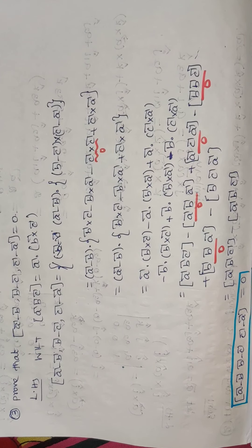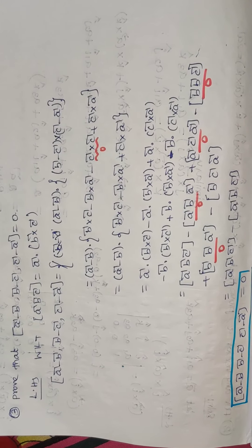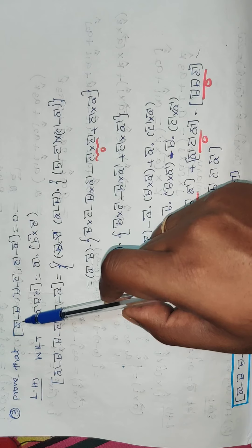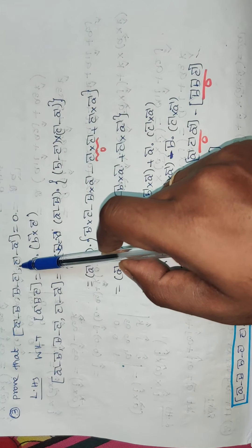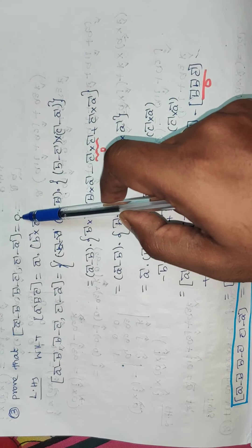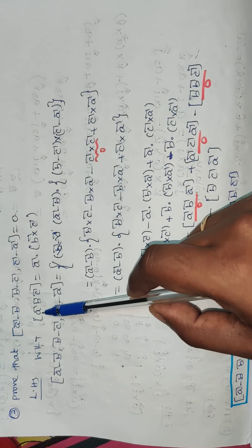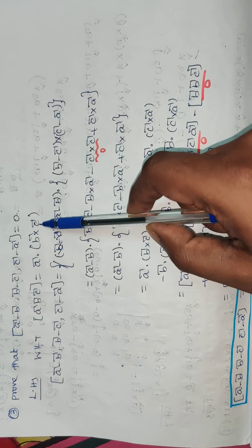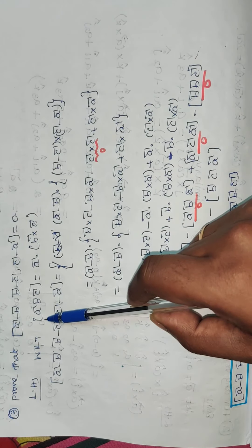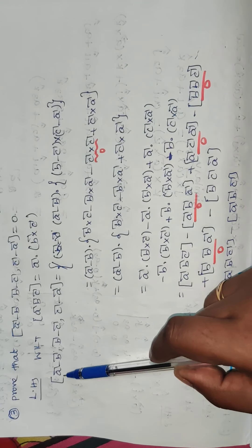Hi children, now we are going to discuss exercise 6.3 question number 3: prove that box of (a-b), (b-c), (c-a) is equal to zero. You already know box [a, b, c] is equal to a vector dot (b cross c). This is the formula — box [a, b, c] equals a vector dot (b cross c).